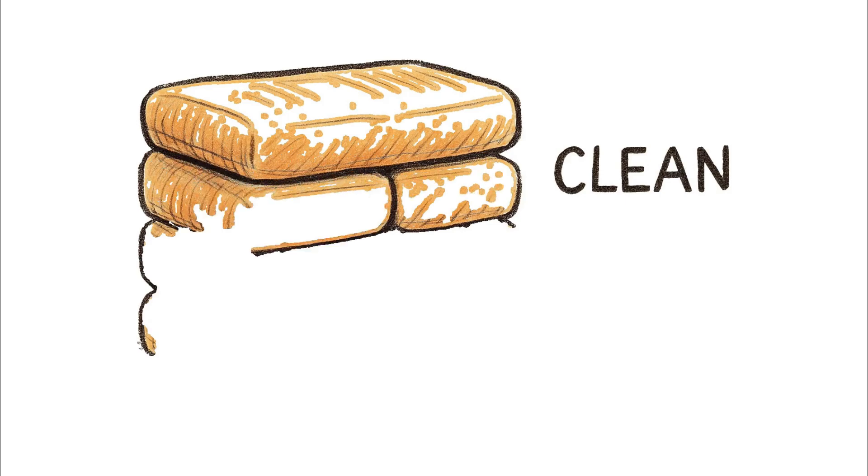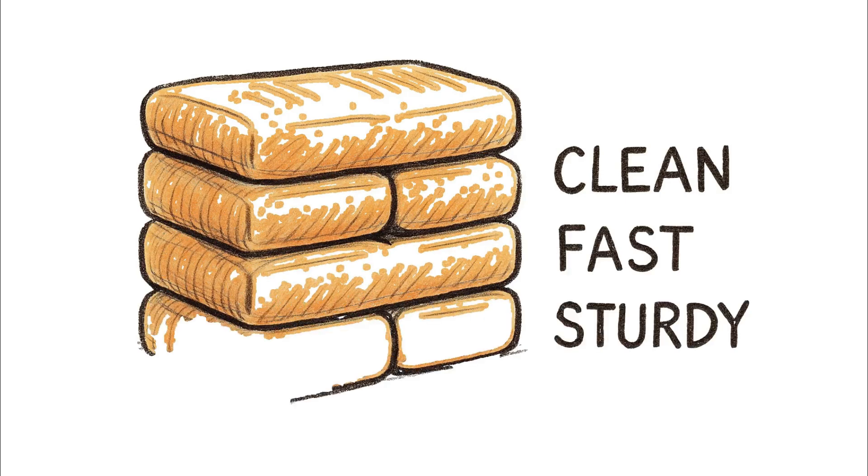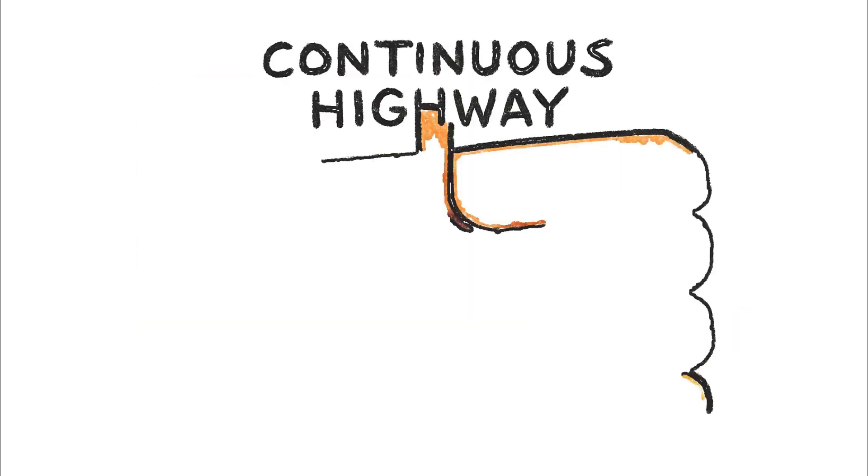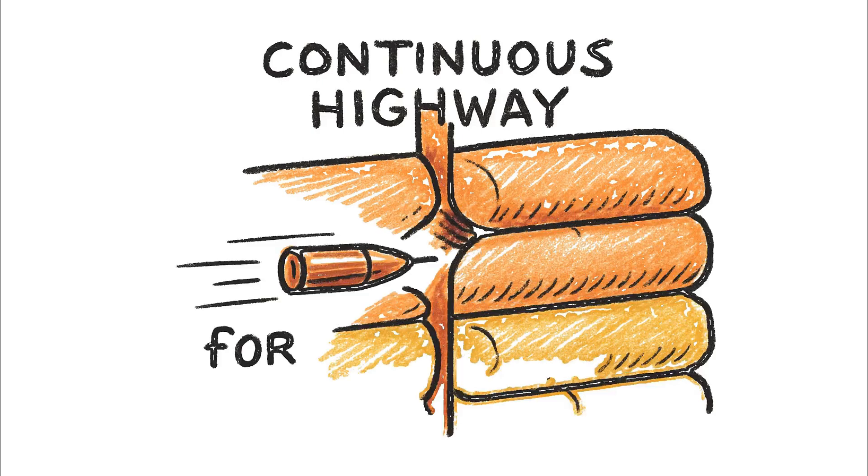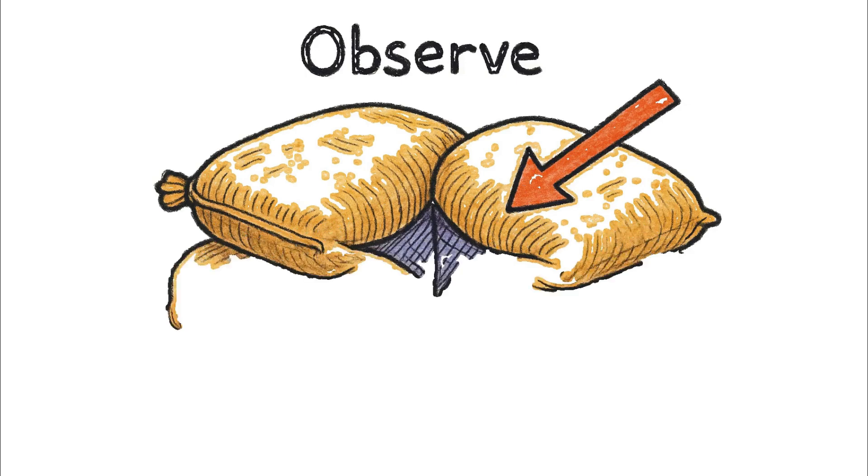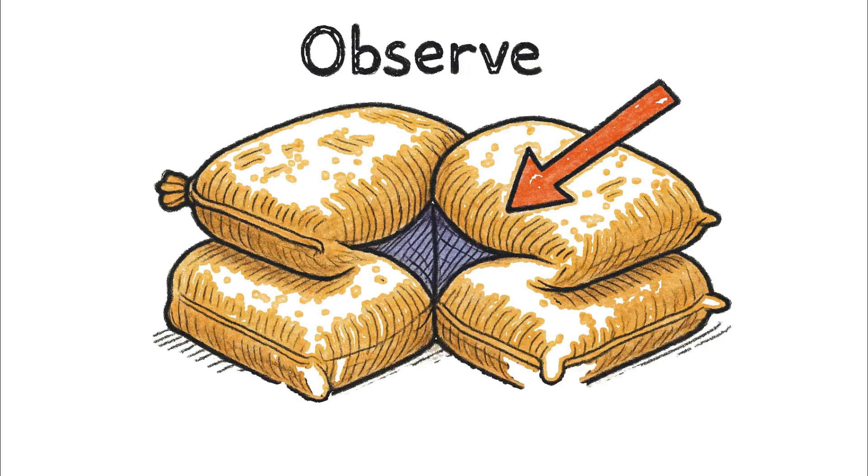It looks clean, it's fast, and it feels sturdy, but what it really creates are channels of weakness. Perfect, continuous highways for a bullet to travel right through the wall. Observe this diagram, where the four corners of these stacked bags meet to form a small, diamond-shaped gap.